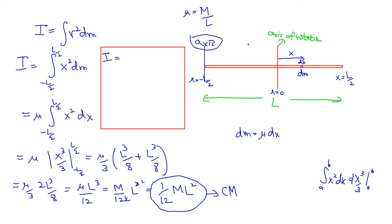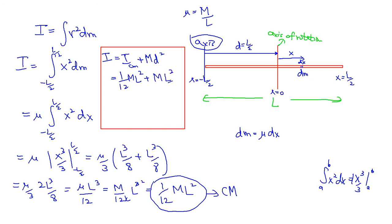The new axis is parallel to the center-of-mass axis, with distance D = L/2 between them. Using the parallel axis theorem: I = I_cm + MD² = (1/12)ML² + M(L/2)² = (1/12)ML² + (1/4)ML². Combining these fractions gives (3/12 + 1/12... wait: 1/12 + 3/12) = 4/12 = 1/3 ML². So the moment of inertia around the end axis is (1/3)ML².